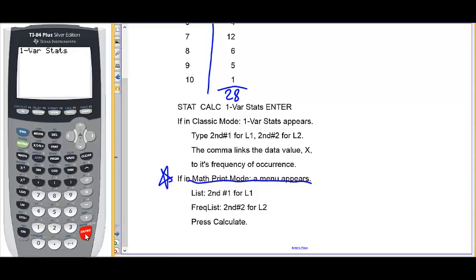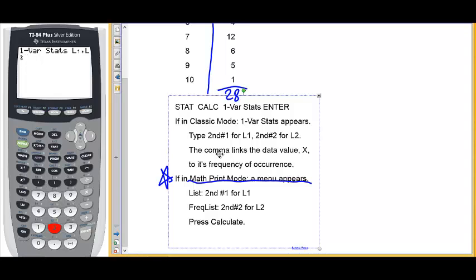This time, we have to be very careful to link each data value with its frequency. The way that we do that is we type second number 1 for L1, the comma, which is located above the 7, and second number 2 for L2. Again, the comma is what's going to link the data value to its frequency of occurrence.